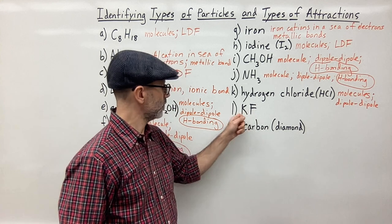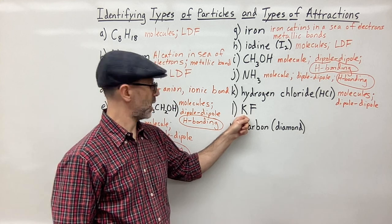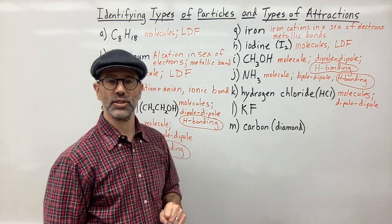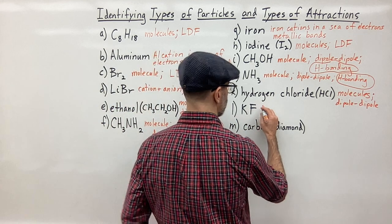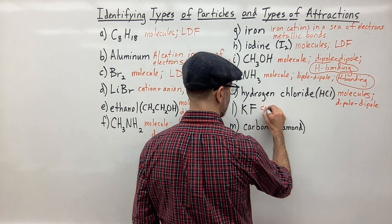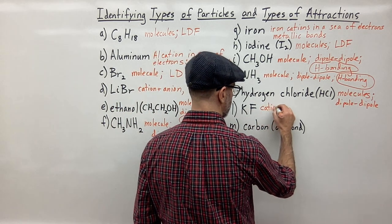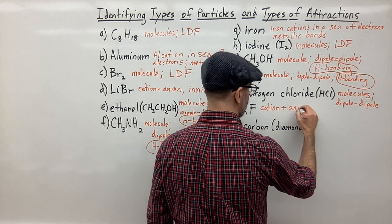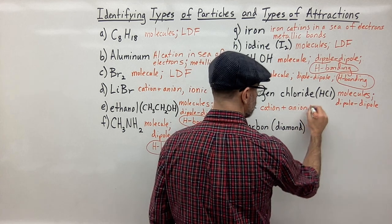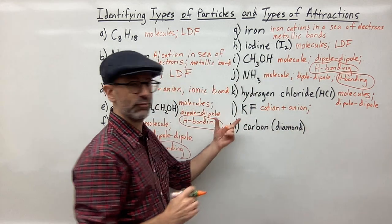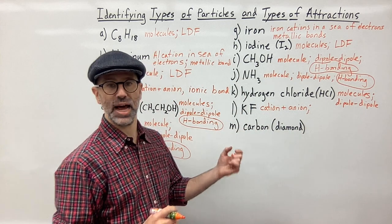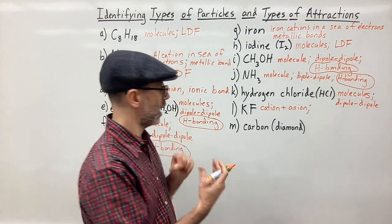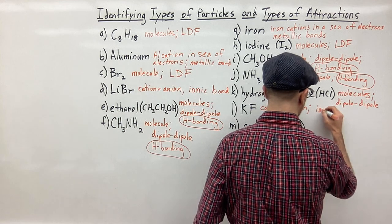Next we have KF. Potassium is a metal and fluorine is a non-metal. With a metal and a non-metal, the particles are the cation — potassium — plus the anion — the fluoride ion. The attractive force is the ionic bond, the electrostatic attractive force between the oppositely charged ions.